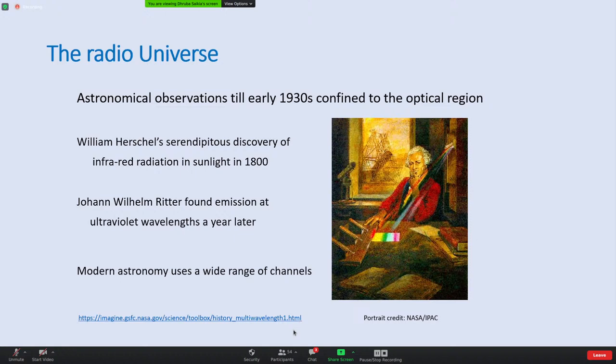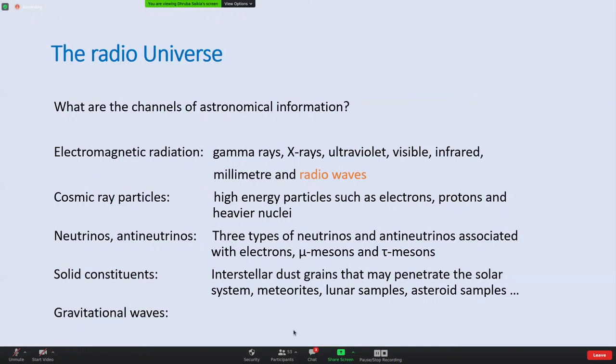This was the situation until the early 1930s: man's understanding of the universe was confined to the optical region of the spectrum. Phenomenal discoveries were made from ancient times to modern times - from discovery of the precession of the earth by Hipparchus the Greek astronomer 2000 years ago, to discovery of the expansion of the universe - all based on optical observations. But then a new window, the radio window, got opened up due to the work of Karl Jansky.